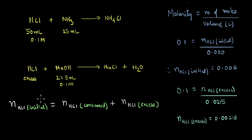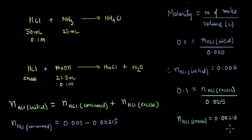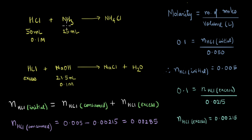Now that we have the initial number of moles and the excess number of moles, we can calculate the number of moles of HCl consumed: 0.005 minus 0.00215, which gives 0.00285. So the number of moles of HCl consumed is 0.00285. And because the mole ratio is 1:1, the number of moles of HCl consumed equals the number of moles of ammonia consumed.